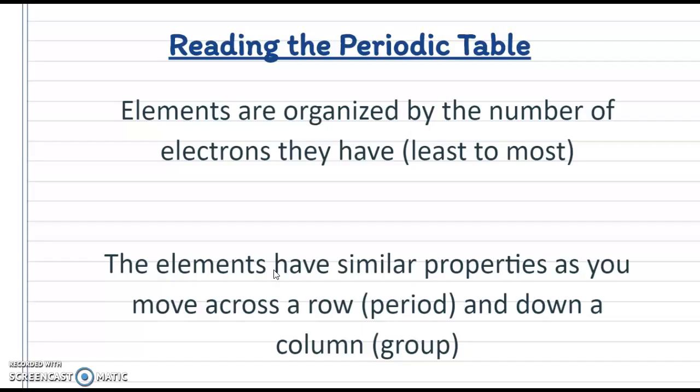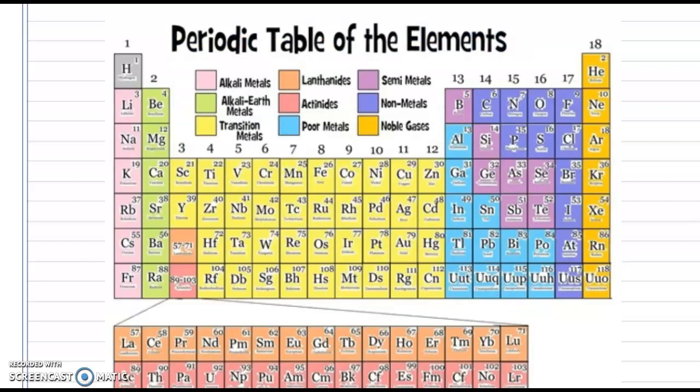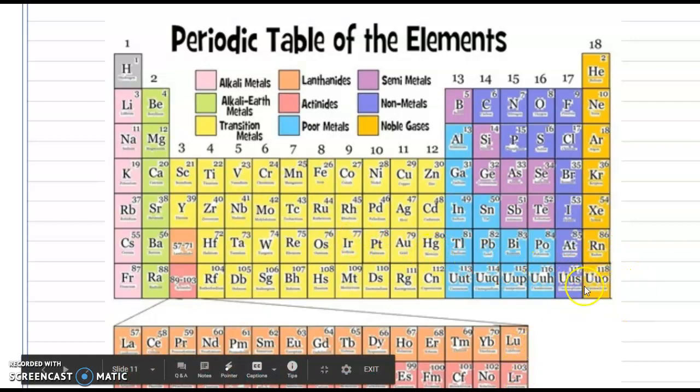So when we're reading the periodic table, elements are organized by the number of electrons they have from least to most. So if we look at this one, we start at the very top left with our least amount of electrons. So we have hydrogen up here which only has one electron, and it goes all the way down to ones down here that are even heavier with a hundred and eighteen electrons.